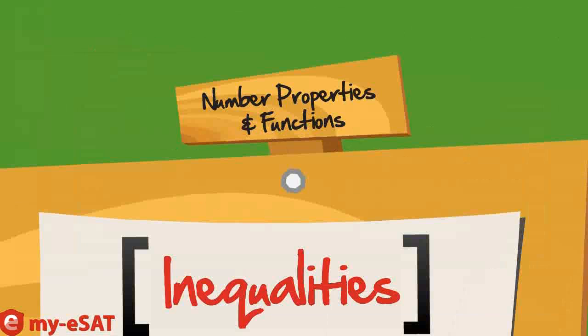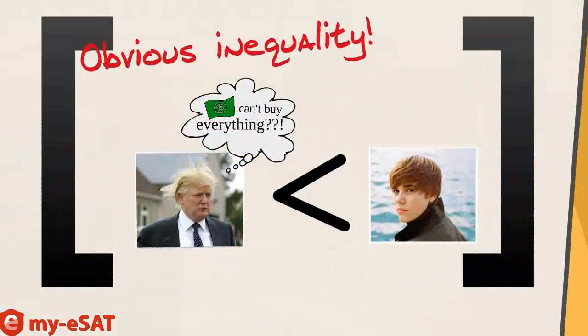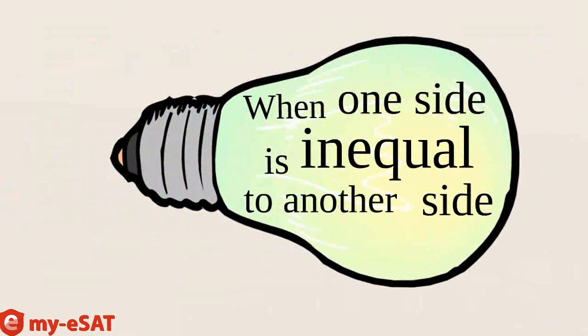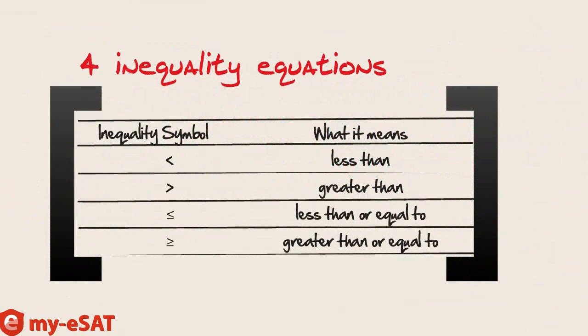Now it's time to learn about inequalities. There are so many inequalities in this world. Like when someone is born with perfect hair like Justin Bieber, and someone else is born with hair like Donald Trump. See? Obvious inequality. Well, math inequalities are similar. It's when one side is unequal to the other side. There are 4 inequality symbols as on the screen.